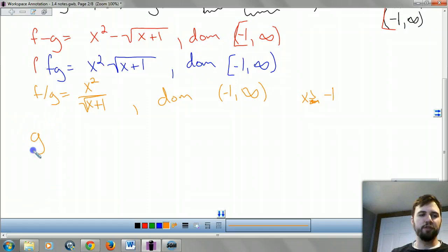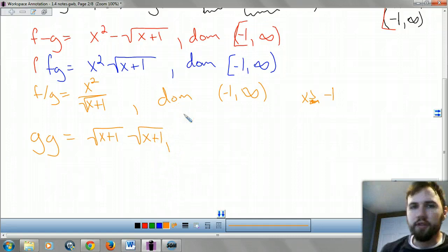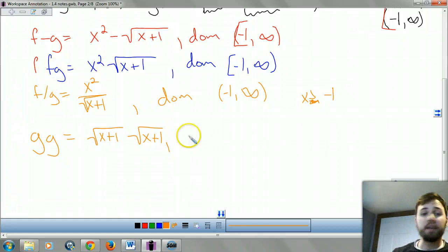And last but not least, we have gg. We have square root of x plus 1 times square root of x plus 1. What's square root of 2 times square root of 2? Go. Yell it. Can't hear you. It's square roots cancel, right? So this is actually equal to just x plus 1.